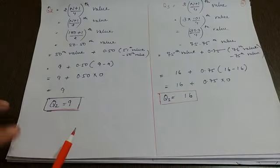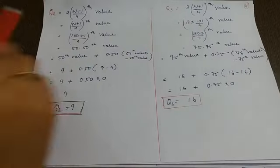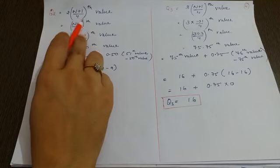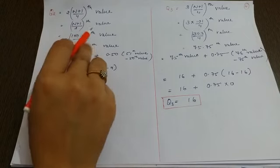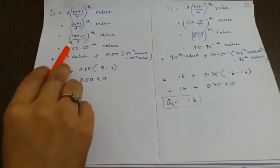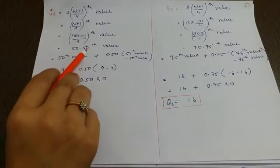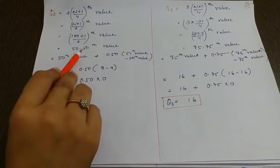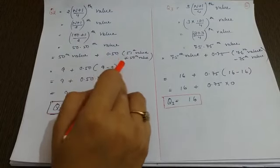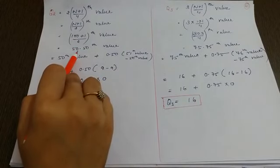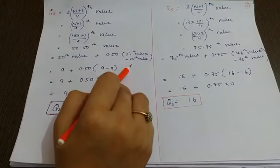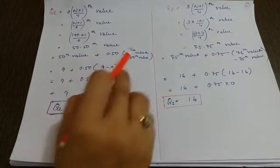Now calculating quartile 2 and quartile 3. Now second quartile, the formula used here is 2n plus 1 by 4th value or n plus 1 by 2th value. Here you can see n is 100. You substitute 100 over here. It will give 50.5th value. In this case also same formula will be used. 50th value plus the decimal value, we will take and after this it lies between 51st and 50th value. So we will take the difference of both.